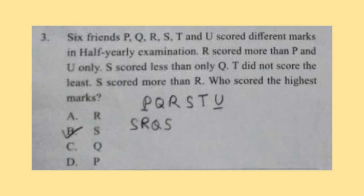Question 3: Six friends P, Q, R, S, T and U scored different marks in a half-yearly examination. R scored more than P and U only. S scored less than only Q. T did not score the least. S scored more than R. Who scored the highest marks? Correct answer is option C, Q. It is written that S scored less than only Q, which means Q has the highest marks because all others have less marks than S. So option C, Q is the correct answer.